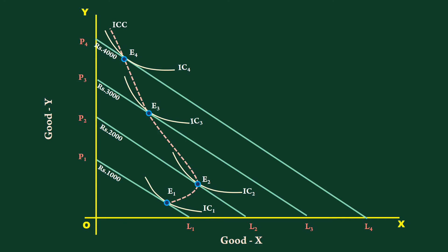The income consumption curve here bends backward. As income consumption curve traces the income effect, we shall examine the quantities purchased by the consumer. We shall start with good Y.